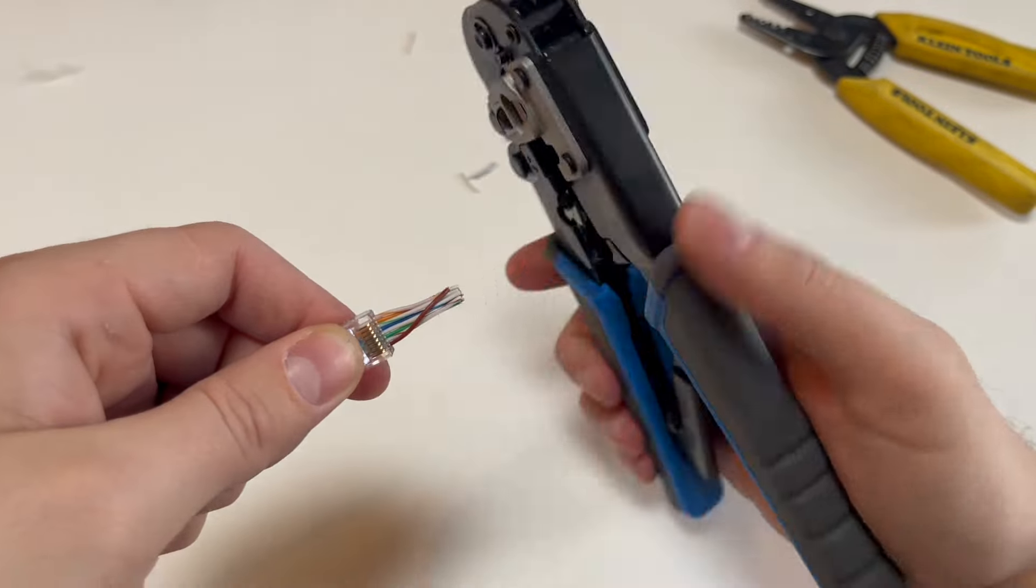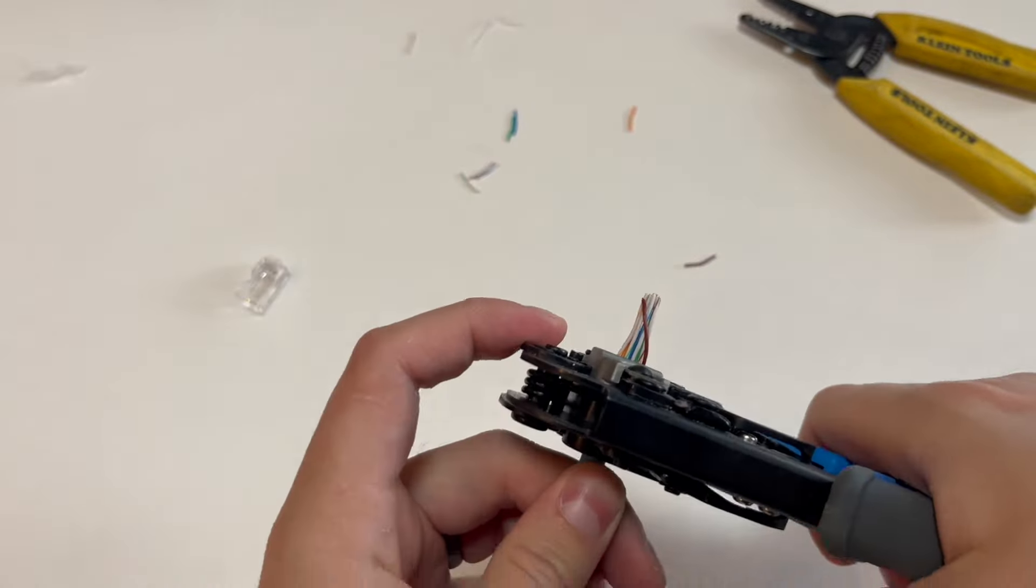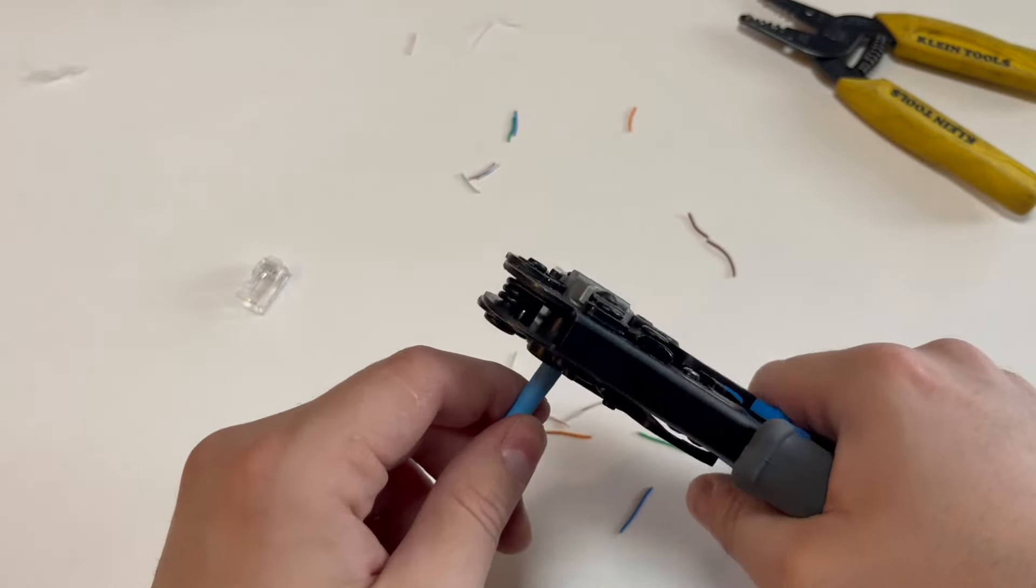Finally, twist the ends of the wires together, then feed the wires and connector into the crimping tool before pressing down to create a clean connection.